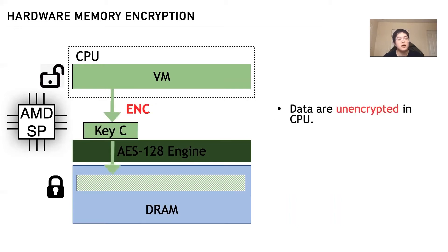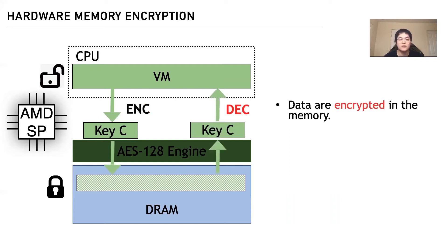Data are unencrypted inside the CPU. When a guest VM writes data to memory, data will be automatically encrypted. Similarly, when a guest VM reads data from memory to cache, data will be automatically decrypted by the AES engine.